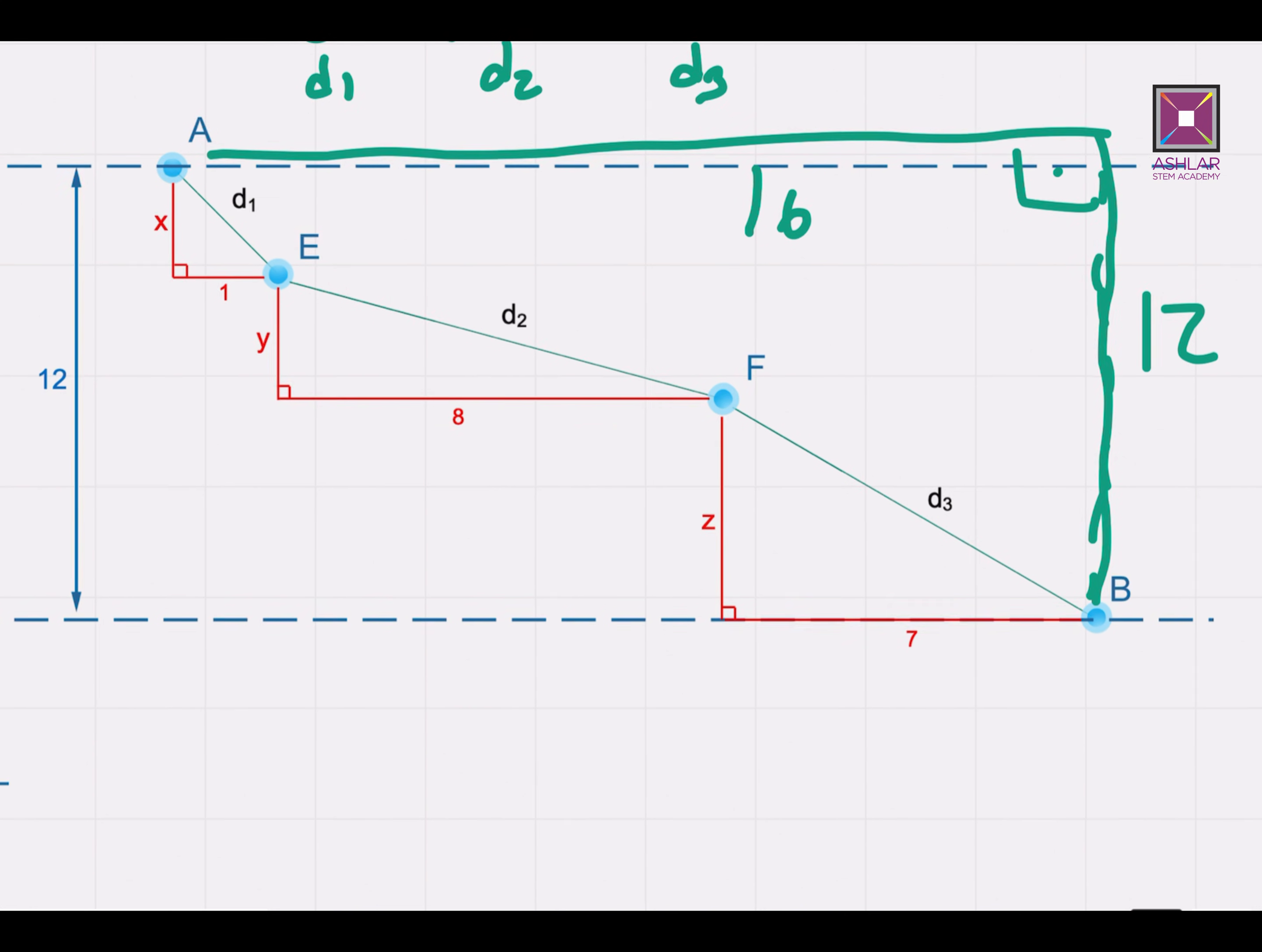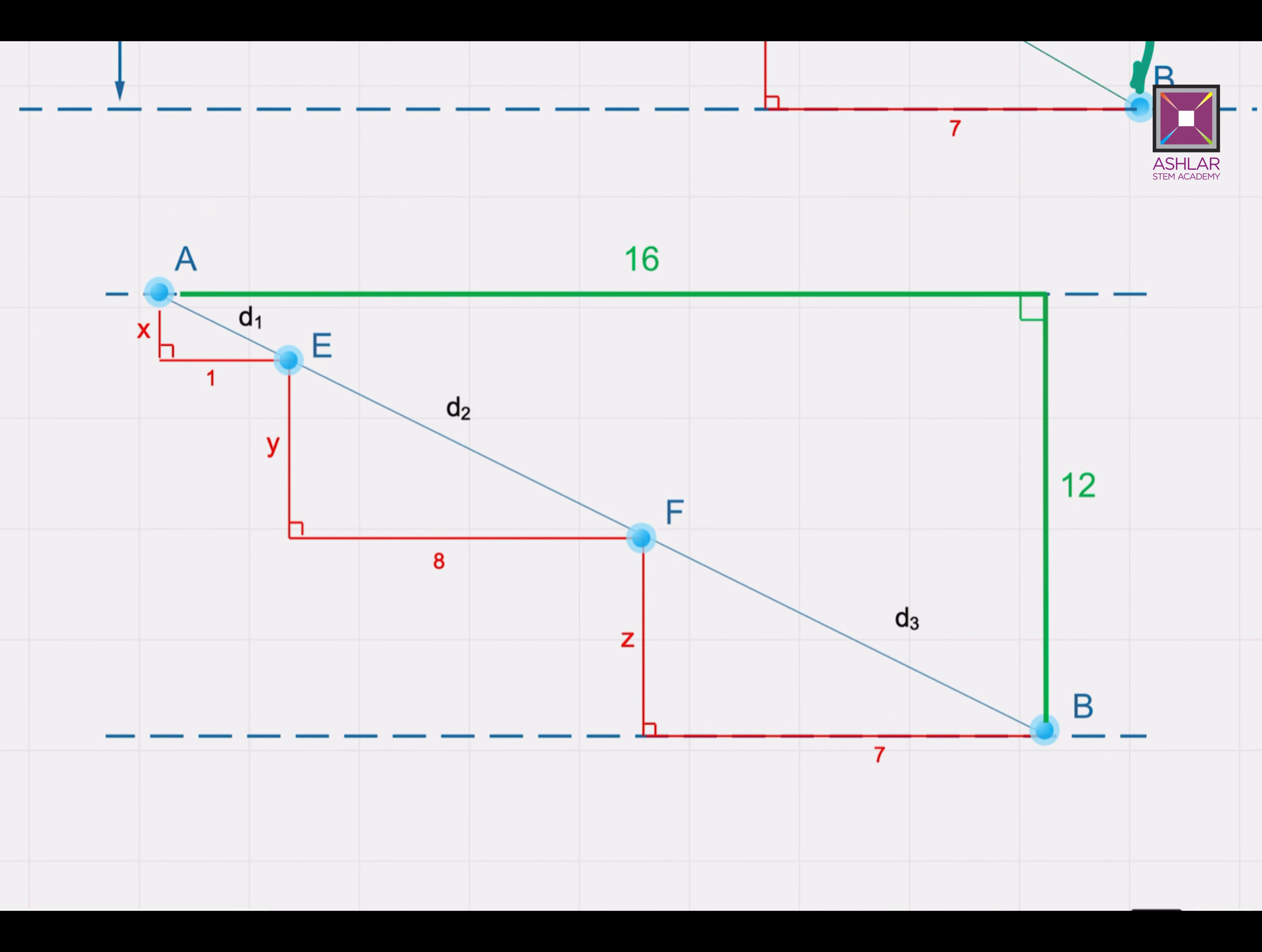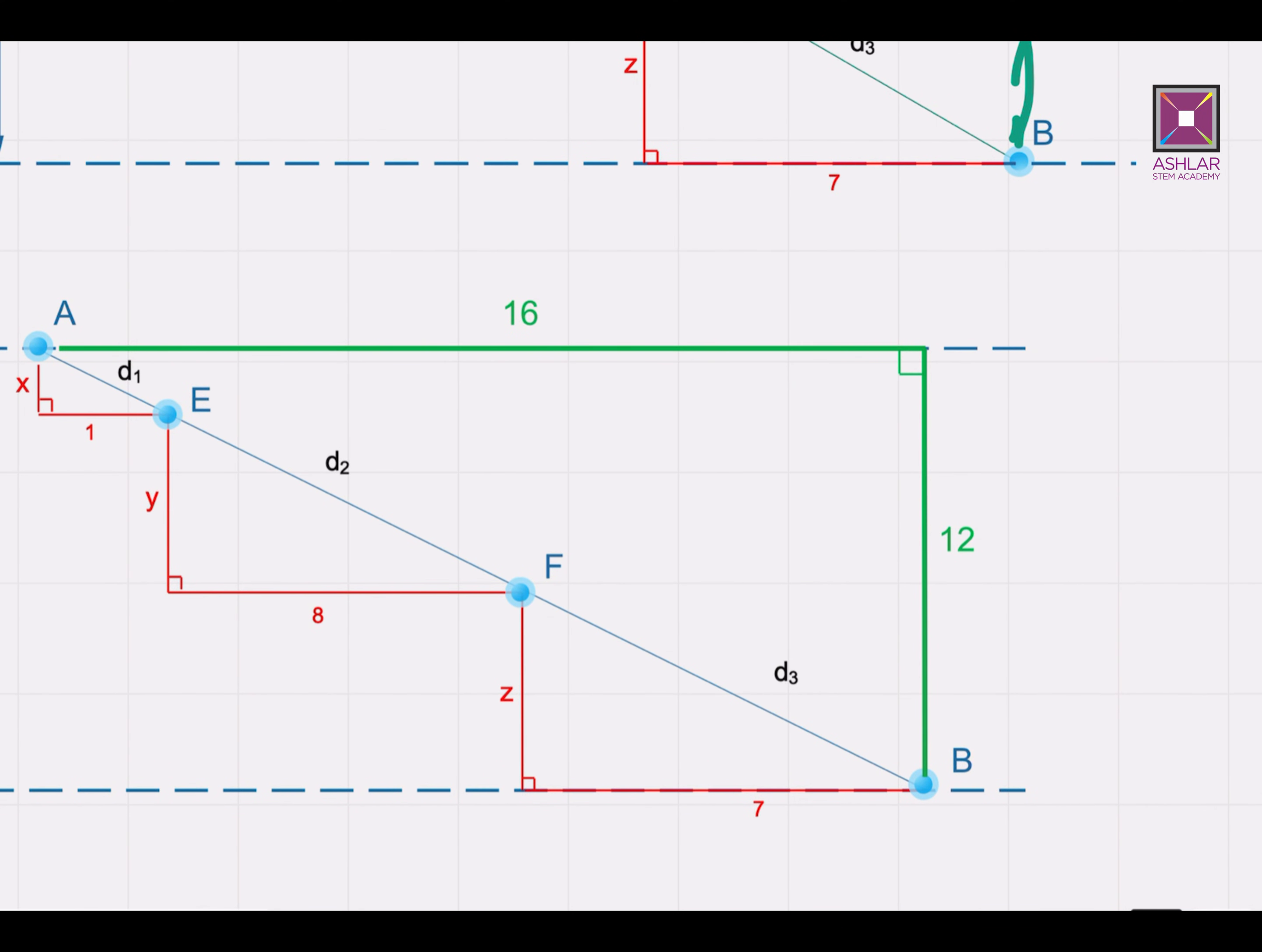So let's draw it. Let's draw what we mean here. Here we go. So now A, E, F, and B are all on the same line, which is a straight line. So as you see, x, y, z are the vertical displacements, 1, 8, and 7 are the horizontal. So in this case, we actually create the shortest distance between points A and B.